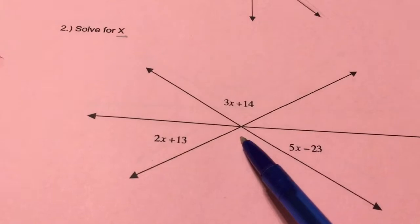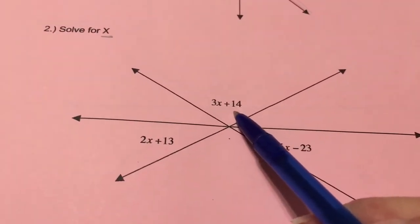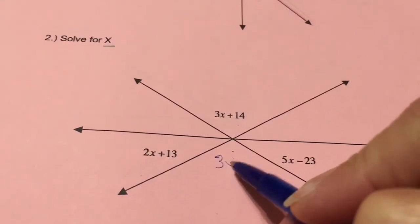Down here we set this one up correctly. If this is 3x plus 14 then this will be 3x plus 14.